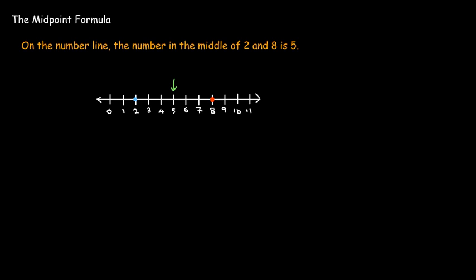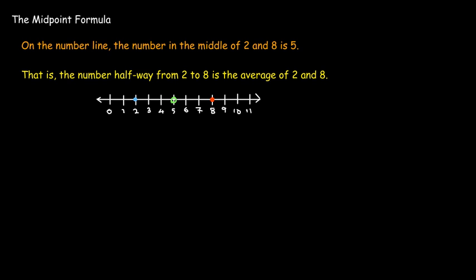Now for the midpoint formula — let's think about a simple case on the number line. What number is halfway between 2 and 8? We can see that's 5, which is 3 units from each. A shortcut is to take the average of 2 and 8: 2 plus 8 equals 10, divided by 2 equals 5.